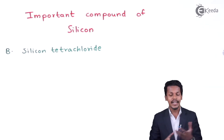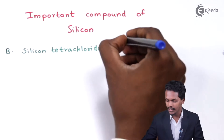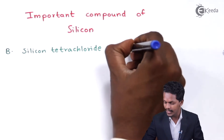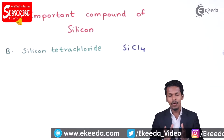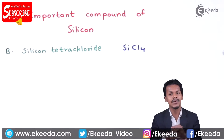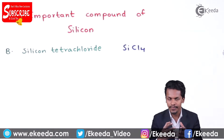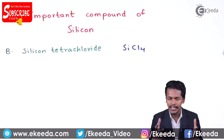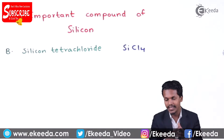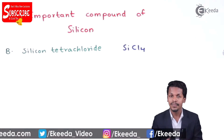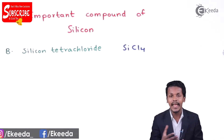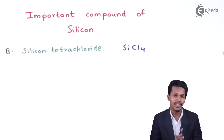Talking about silicon tetrachloride, the molecular formula is SiCl₄. If we observe, silicon tetrachloride has a coordination number of four — it forms four bonds with the four chlorine atoms present. However, this does not mean silicon will only have a coordination number of four like that of carbon.